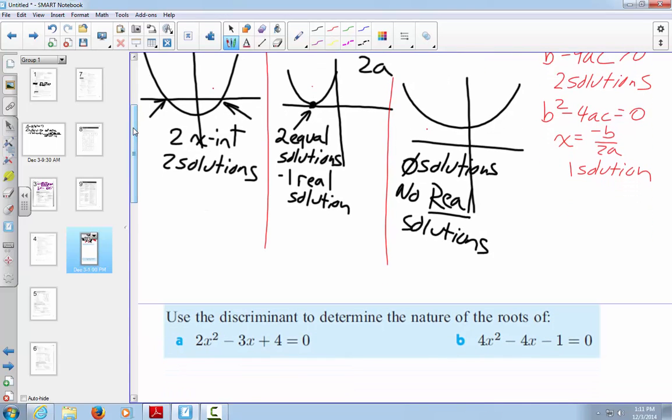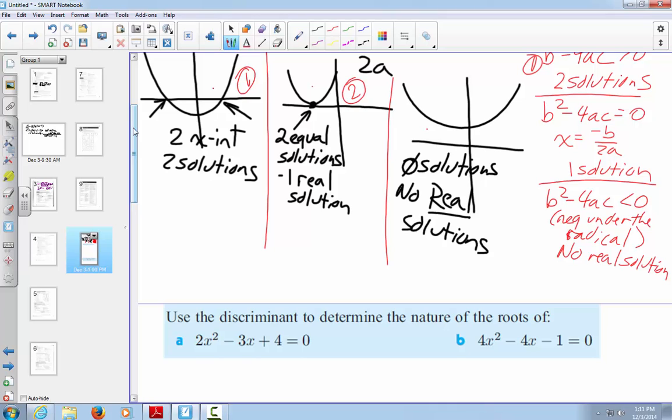Then, we have another situation. b squared minus 4ac is less than zero. That means I have a negative under the radical. And as we know, no real solution, because you can't determine the square root of a negative number. So, I'll call that case 1, case 2, case 3.